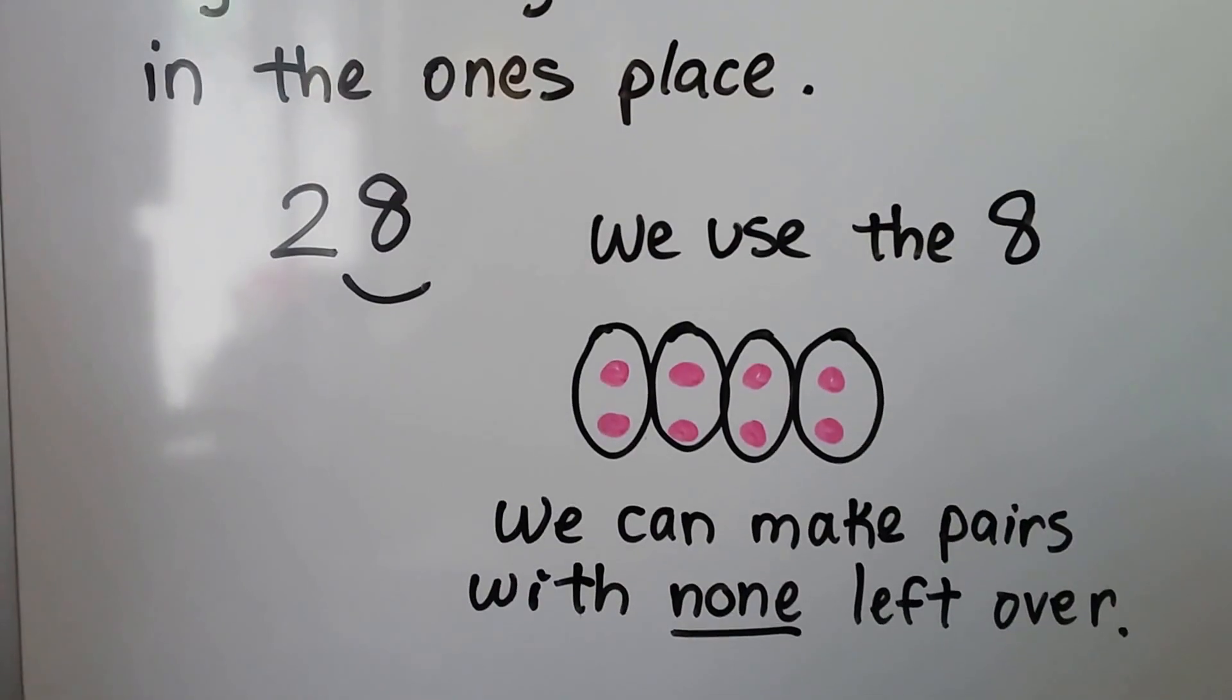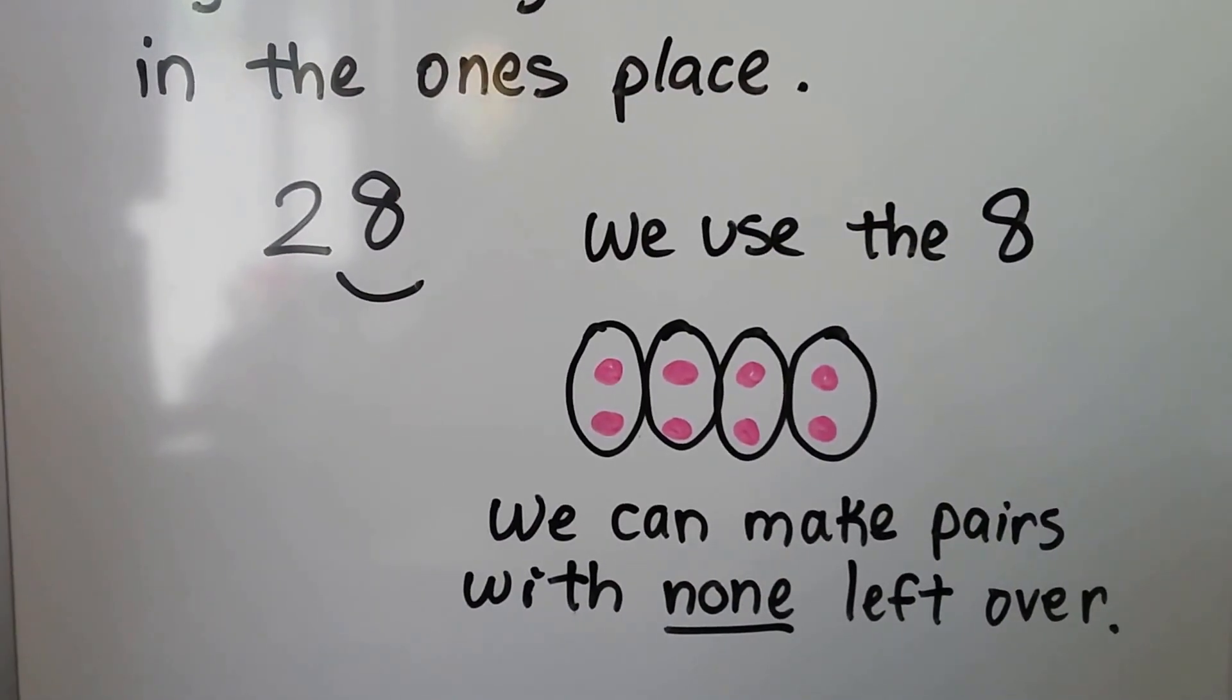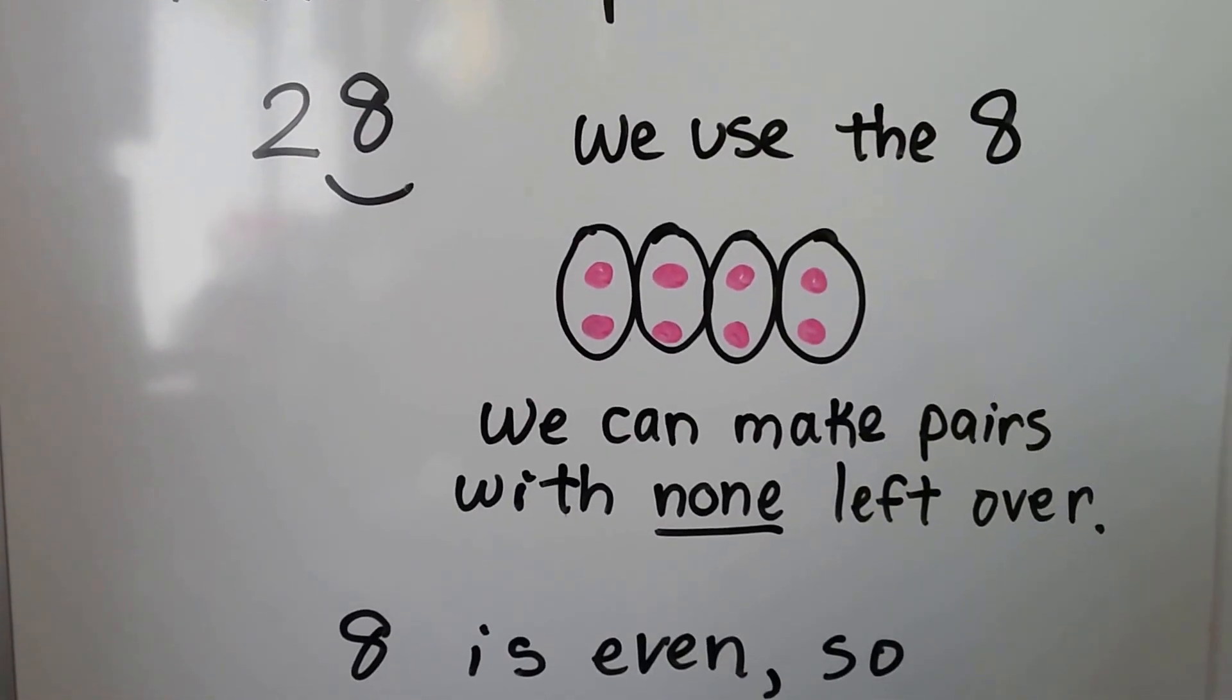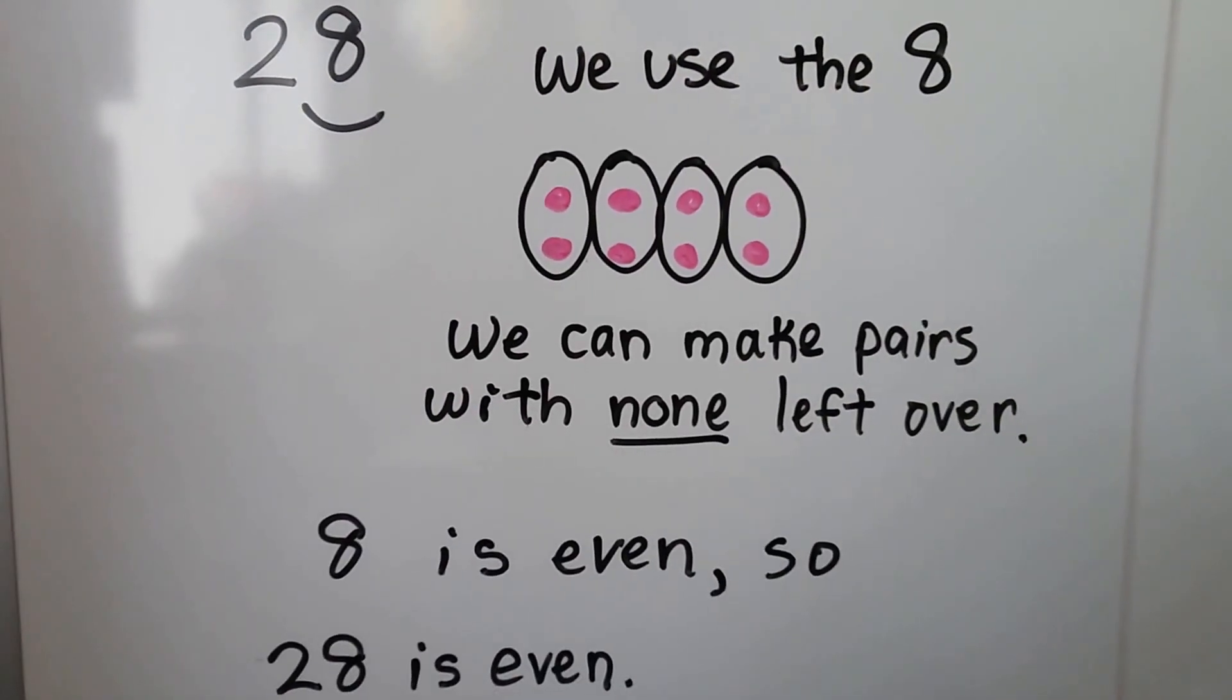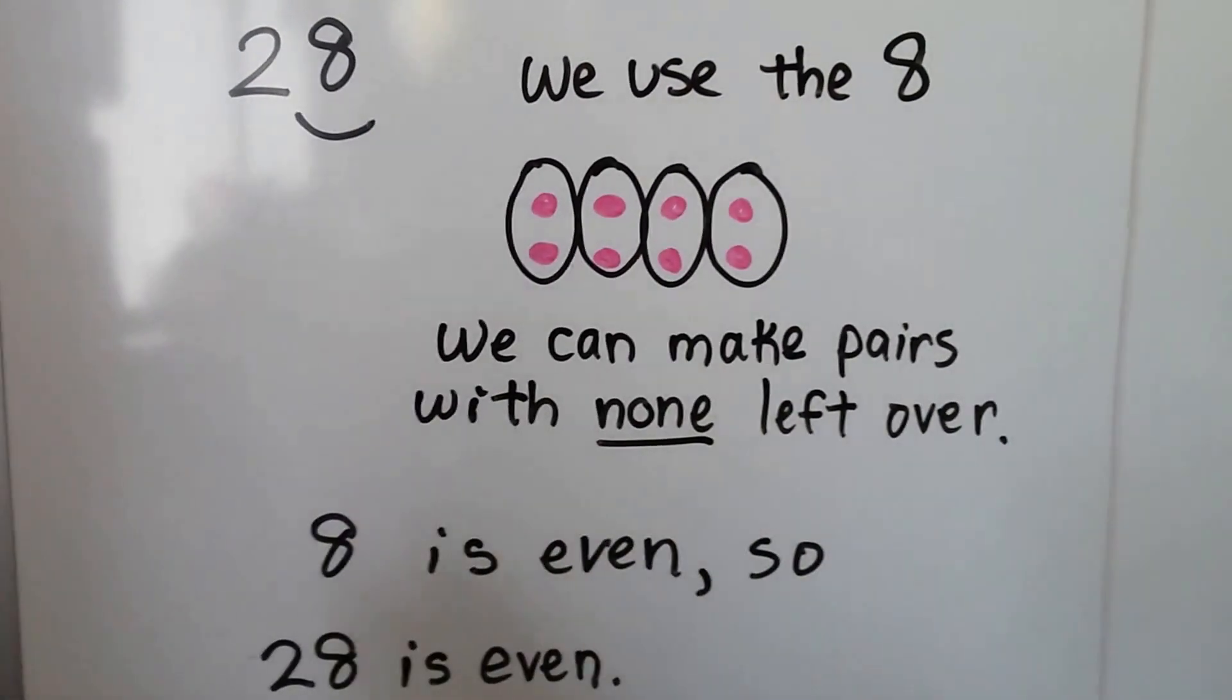If we can make pairs with none left over, 8 is even, so 28 is even. We just use the number in the ones place.